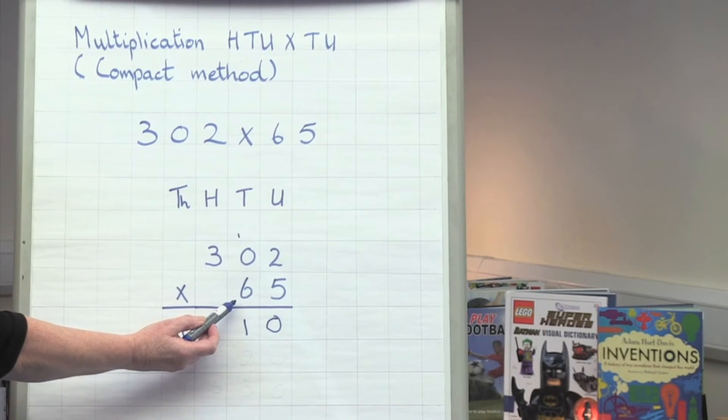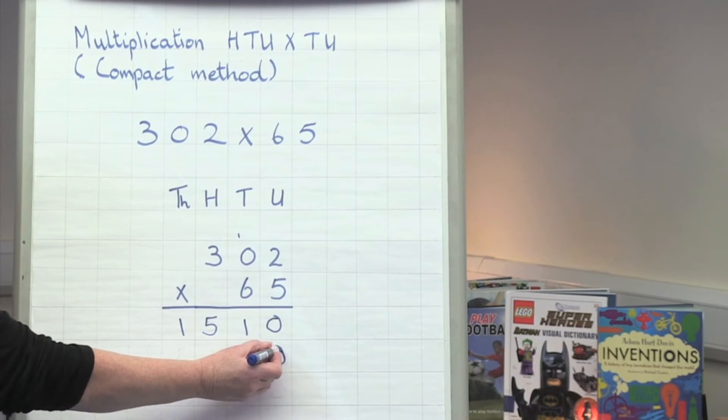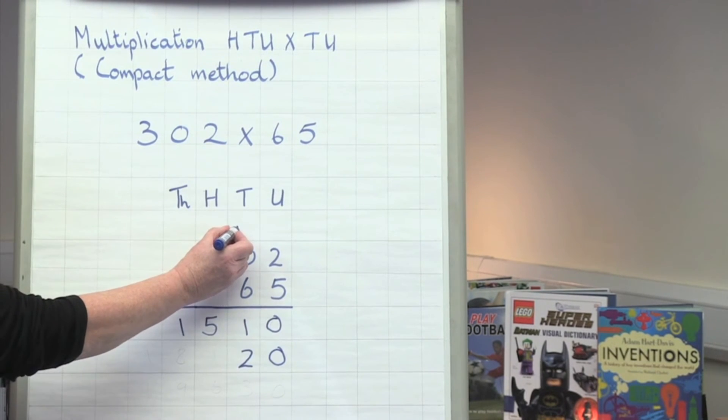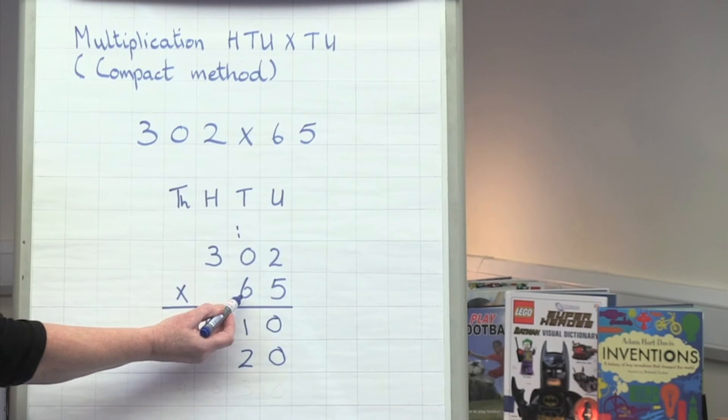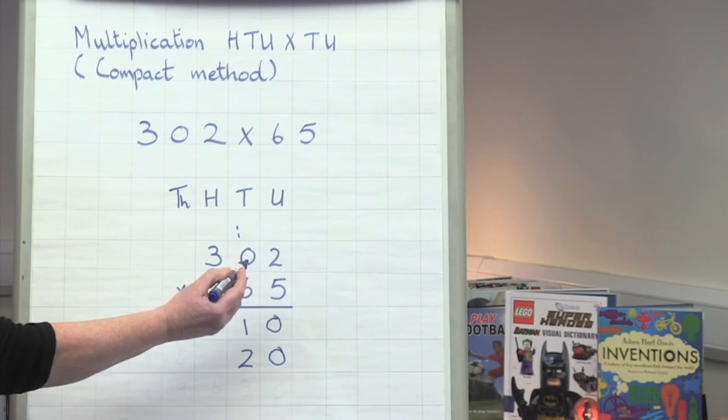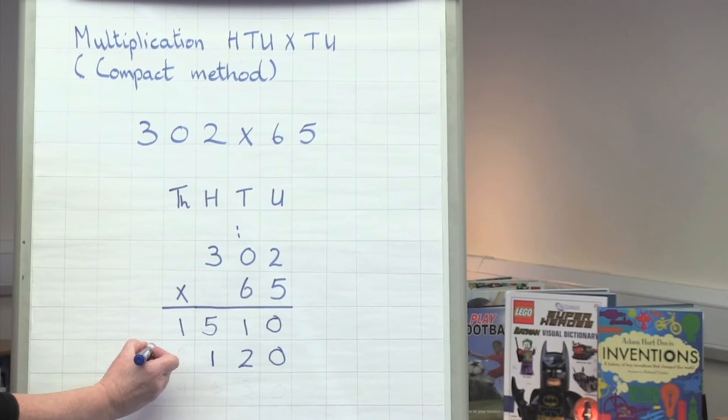I'm now going to multiply by 60. In order to show it's 60, not 6, I put in my 0 placeholder. 6 times 2 is 12. Put down my 2 and carry my 1. 6 times 0 is 0 and 1 is 1. 6 times 3 is 18.